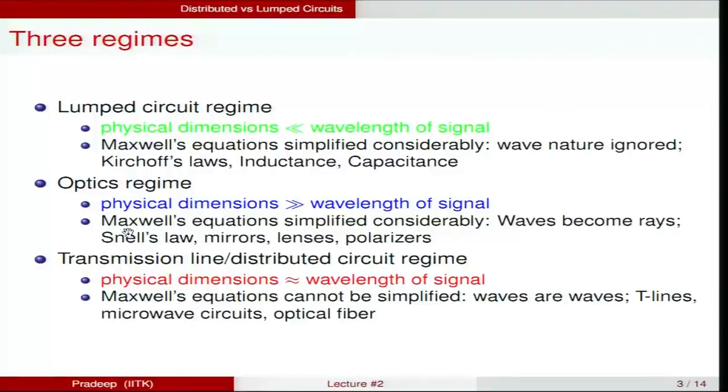The voltage at any point on the circuit will be dependent on that particular node. However, within a given wire itself the voltage will not change from one point to another. On a transistor circuit the voltage at the base, emitter, and collector are all different. But 0.1 centimeter or 1 centimeter away from the base along the connecting wire — if no circuit elements are connected in that region — the voltage will actually be the same.